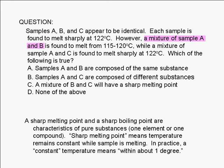Mixing samples A and B gives us something with a wide melting temperature range, 115 to 120 degrees. Therefore, samples A and B are definitely not the same substance. Therefore, choice A is false.